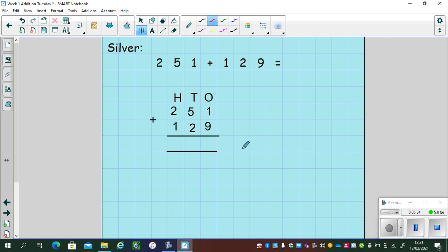Let's start with the ones like we always do. Nine add one is ten. That's zero in the ones column and a one in the tens column. That is ten ones have been exchanged for one ten. So I put it in the tens column where it belongs. Five add two is seven. Don't forget to add one more. That makes eight. Now look at the hundreds column. Two add one is three. So my answer here is 380. And I did a three digit add a three digit number, but I still only had one exchange to do.